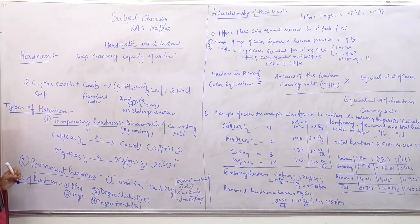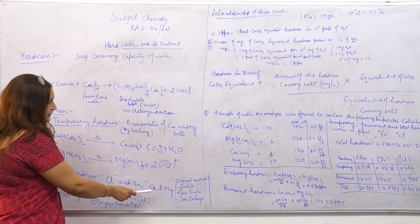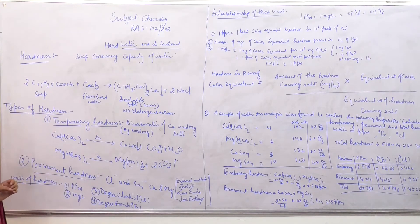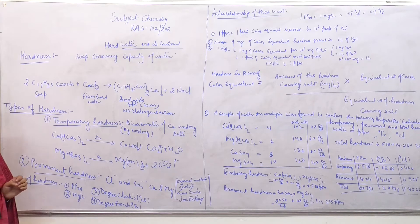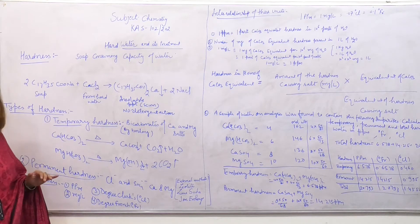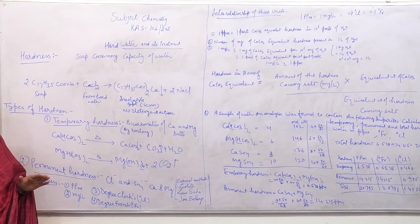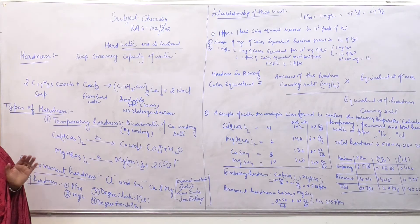Permanent hardness is due to the presence of chlorides and sulfates of calcium and magnesium or other heavy metal ions. It is also known as non-carbonate hardness or non-alkaline hardness. But it cannot be removed by boiling — we need some special chemical method for removing it.